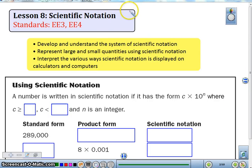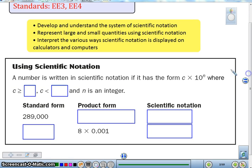In Lesson 8, C8 Scientific Notation, our two standards are EE3 and EE4. We want you to be able to develop a system of understanding the system of scientific notation. This is used to represent really large and small quantities using scientific notation and interpret different ways that scientific notation is displayed on calculators and computers.